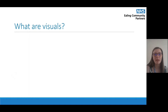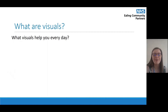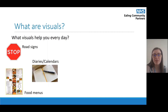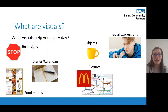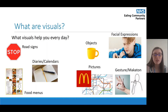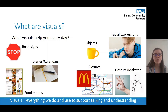So let's start by thinking about what visuals are. Visuals help us in everyday life — things like road signs, diaries, calendars, and food menus. It could also be us using objects or facial expressions to support our message. We might use pictures, gesture, or something called Makaton where we are using our hands to support what we are trying to say. Basically, visuals are everything that we do and use to support talking and understanding.